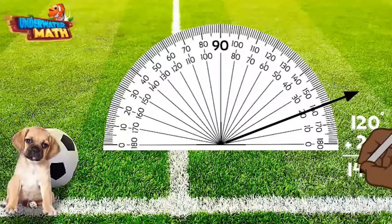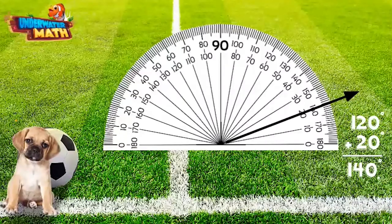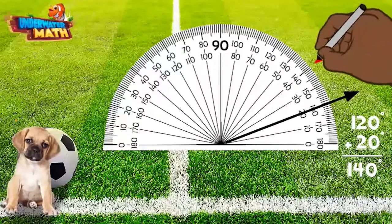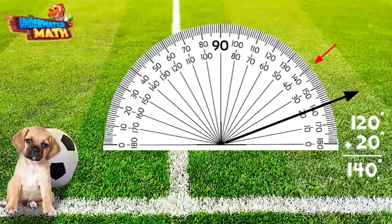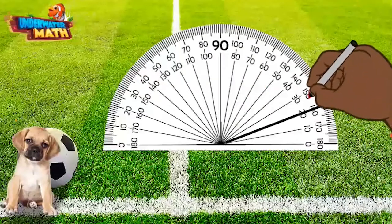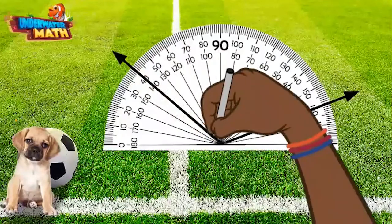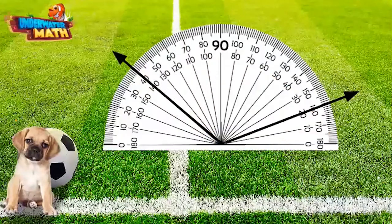120 degrees plus 20 degrees equals 140 degrees. But there are two points that show 140 degrees — which one should we use? We use the bottom numbers. When we look at the first ray at 20 degrees, this means we need to continue looking at the bottom numbers of the protractor.